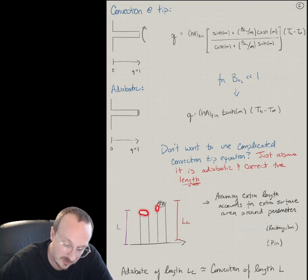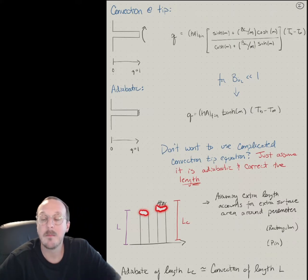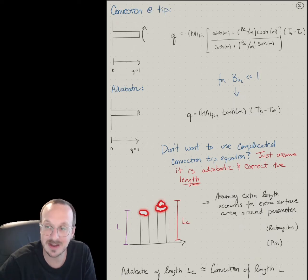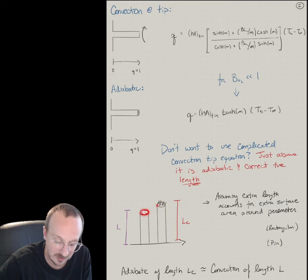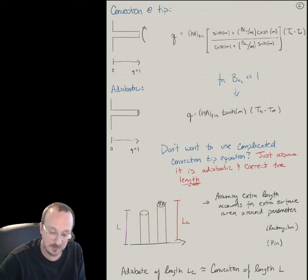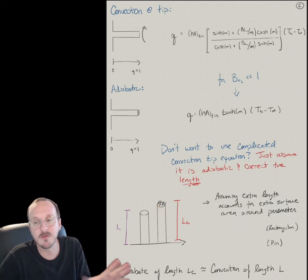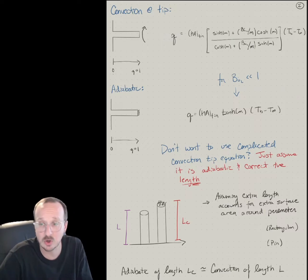What you do is you say, let's put that extra surface area by making the fin a little bit longer, but assuming it's adiabatic. So let's transfer this surface area to the fin tip. It's not perfect because there's going to be a little bit of a profile at the tip, but the profile changes fairly flat, so it's a good approximation.